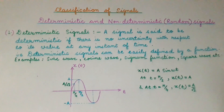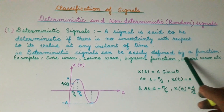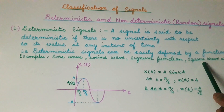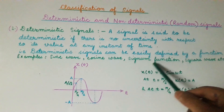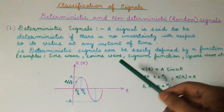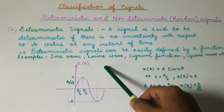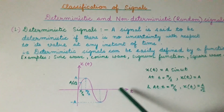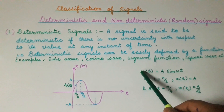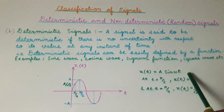All these signals such as sine wave, cosine wave, signum function, and square wave are all deterministic signals, because we can write equations for all of these waveforms. For example, if you want to plot a sine wave, we can easily do so because we know that a sine wave is expressed by the equation x(t) = A sin(ωt).